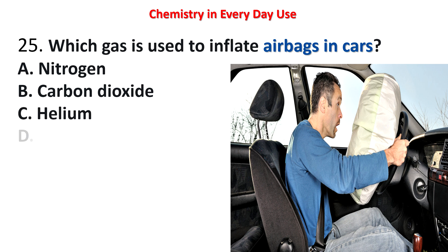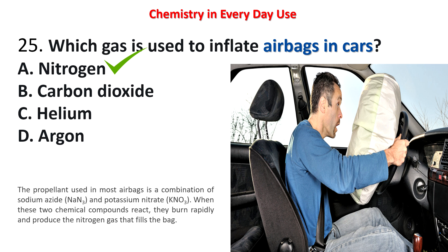Next question: which gas is used to inflate airbags in cars? Options: nitrogen, carbon dioxide, helium, argon. The answer is nitrogen. The propellant used in most airbags is a combination of sodium azide (NaN3) and potassium nitrate (KNO3). When these two chemical compounds react, they burn rapidly and produce the nitrogen gas that fills the bag — this is the system used in car airbags.